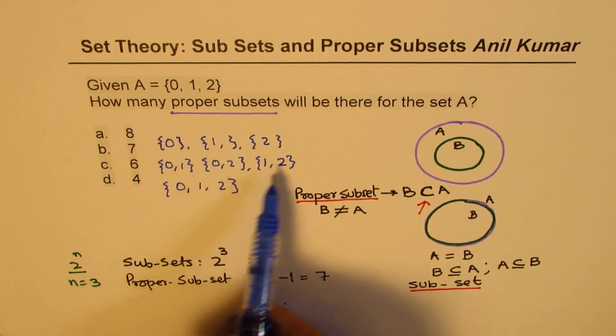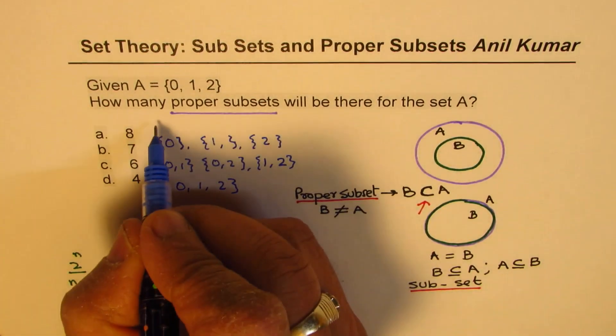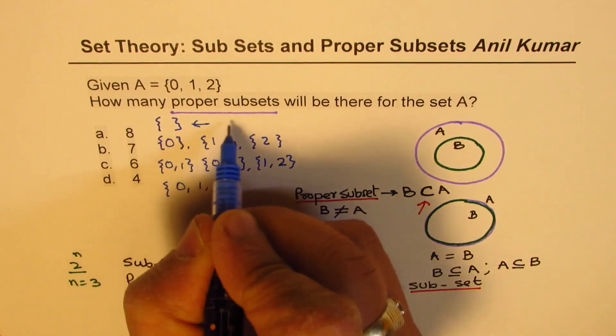These are one, two, three, four, five, six, and one seven. What I missed is a null set. So this is a null set.